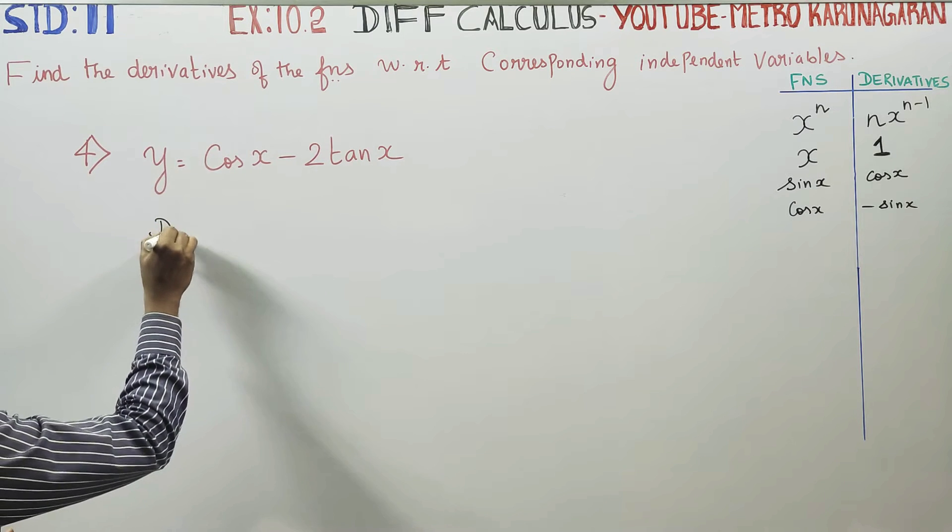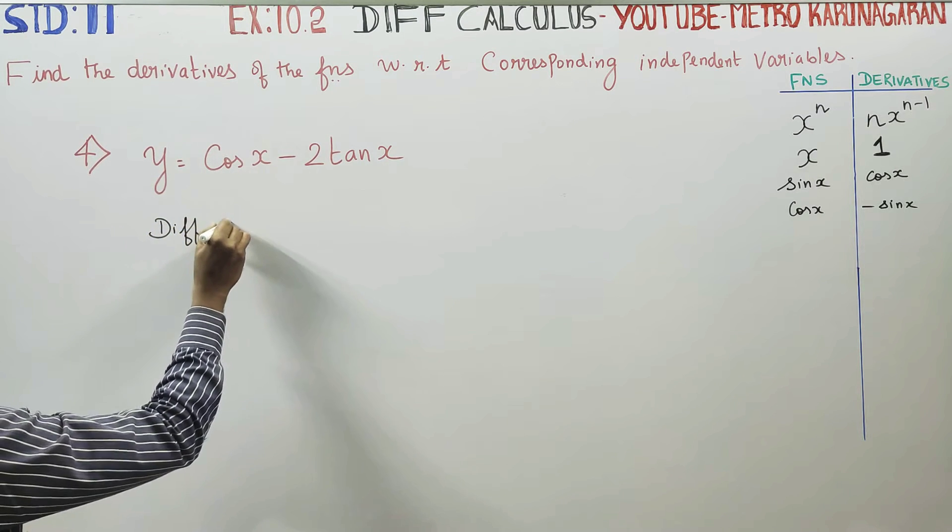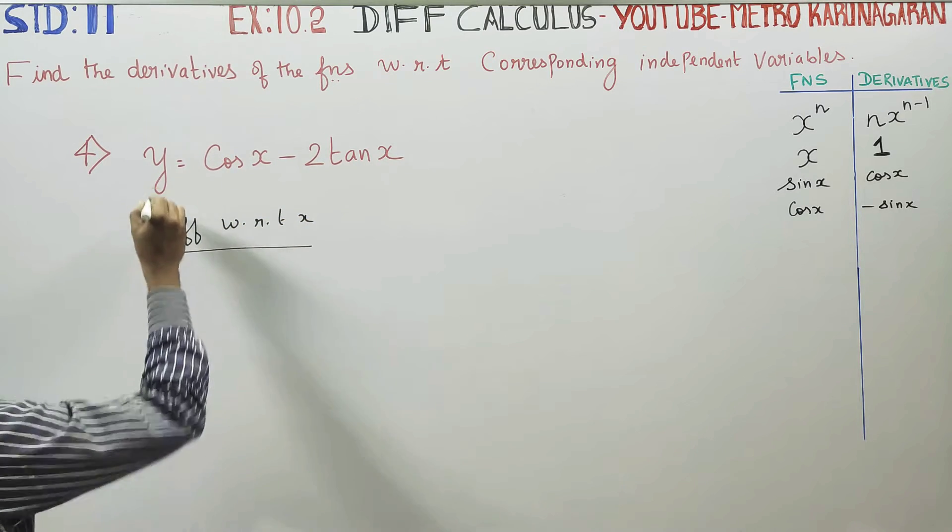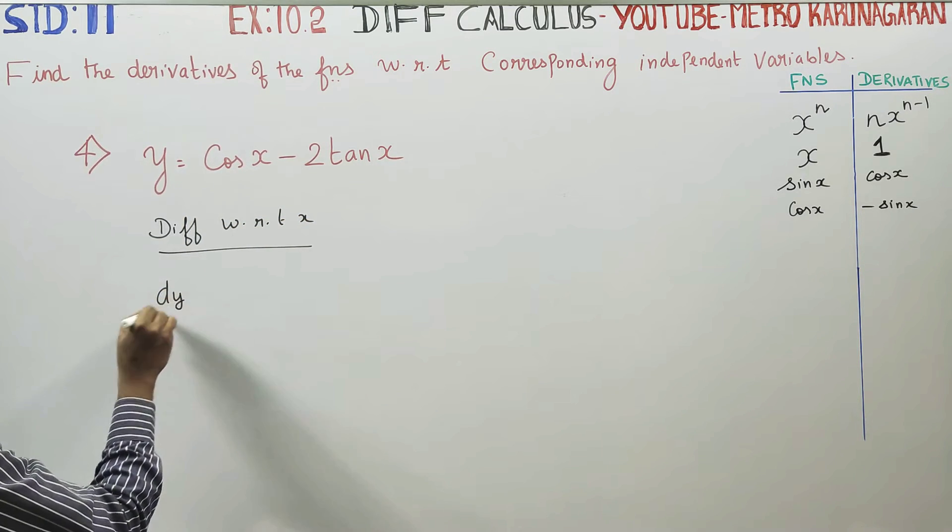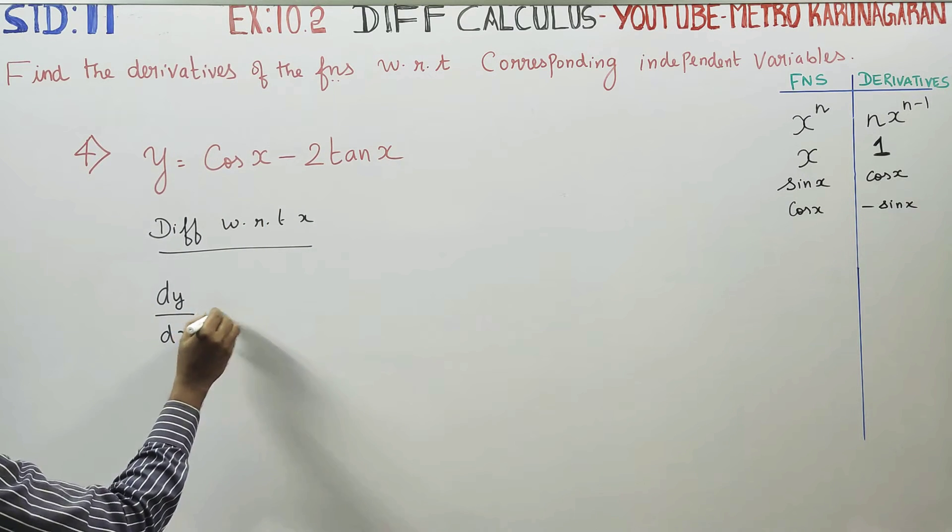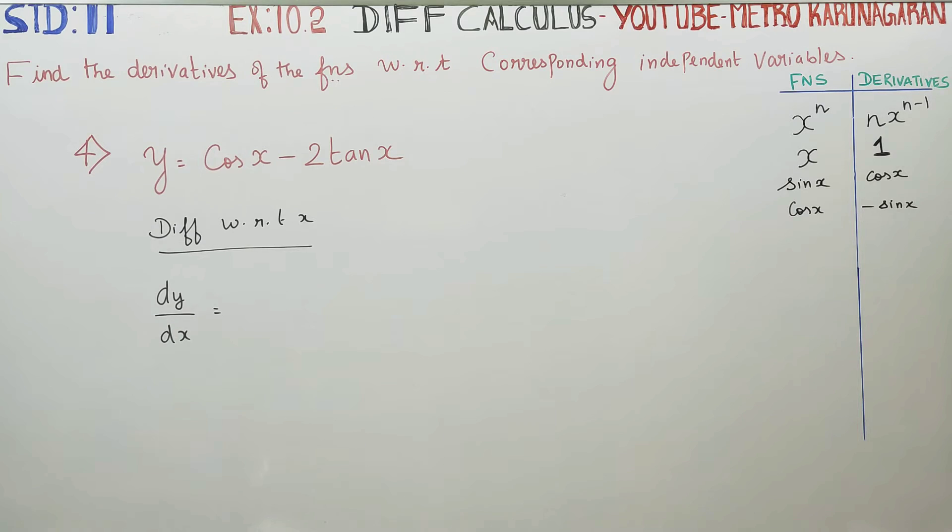Apoor, differentiate with respect to x. We can write dy by dx. Y in the summa x kaag differentiate pannu, dy by dx. Apoor.